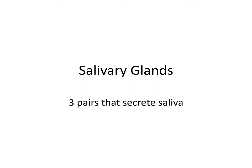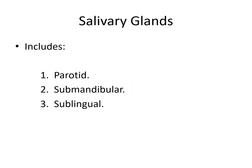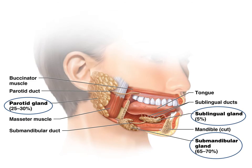Salivary glands — we have three pairs that secrete saliva. These include the parotid, submandibular, and sublingual. The parotid gland is right in front of the ear and it's the largest one, producing 25 to 30% of the saliva. The sublingual gland is underneath the tongue and produces 5% of the saliva.